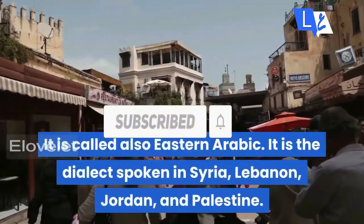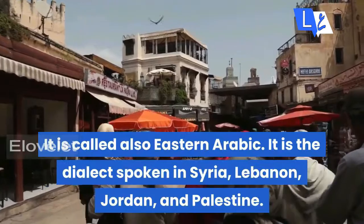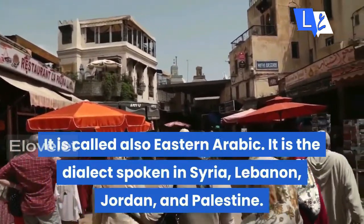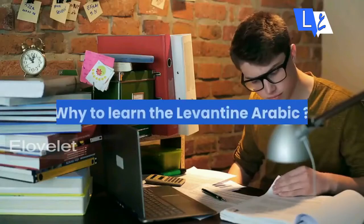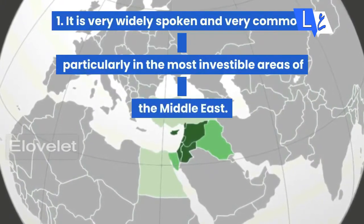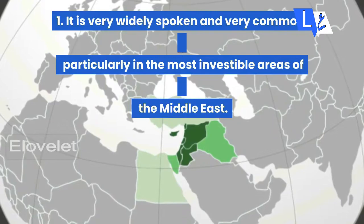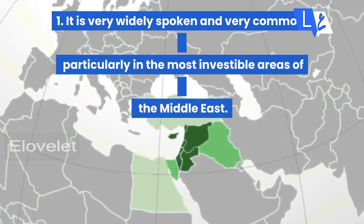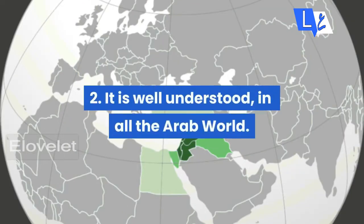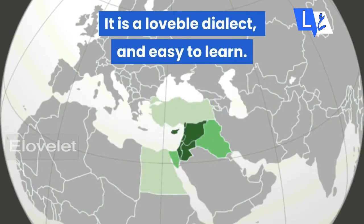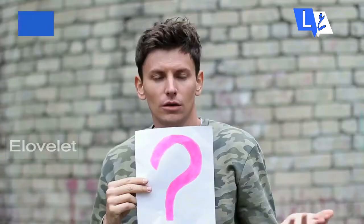Now let's look at Levantine Arabic, also called Eastern Arabic. It is the dialect spoken in Syria, Lebanon, Jordan, and Palestine. Why learn Levantine Arabic? One, it is very widely spoken and very common, particularly in the most notable areas of the Middle East. Two, it is well understood across the Arab world. It is a lovable dialect and easy to learn.